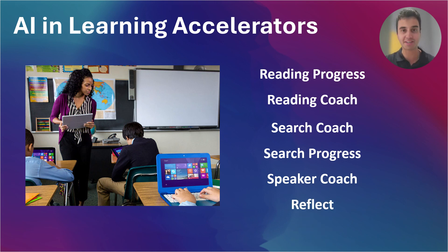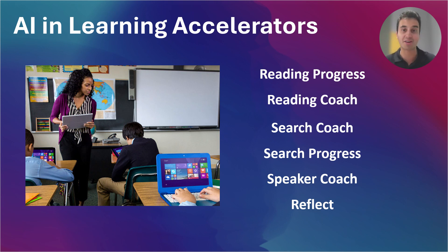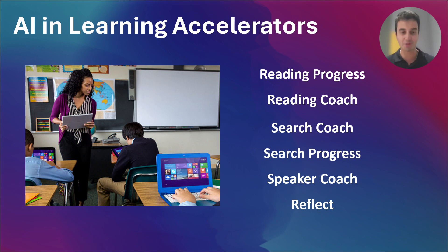Lastly, with Reflect, AI is used to help students identify and express how they feel in safe and fun ways by using a chatbot that asks them how they feel and why. AI can also help generate a personalized emoji that represents their mood and provide resources and tips on how to cope with different emotions. This can help students with different emotional states and experiences to develop their social-emotional skills and well-being.